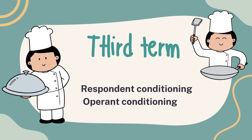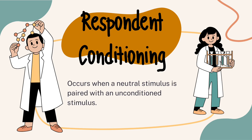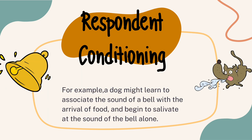The third term is about respondent and operant conditioning. Respondent conditioning is a type of learning in which an organism learns to associate a neutral stimulus with a naturally occurring stimulus. Over time, the neutral stimulus becomes a conditioned stimulus that elicits the same response. For example, a dog might learn to associate the sound of a bell with the arrival of food and begin to salivate at the sound of the bell alone.